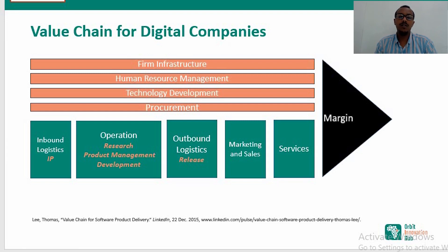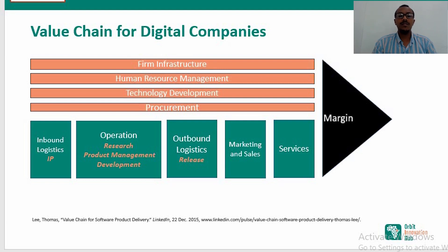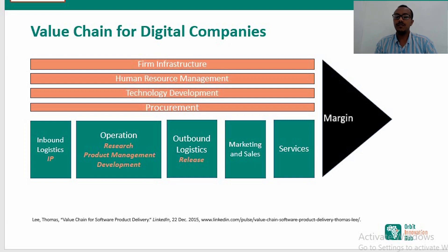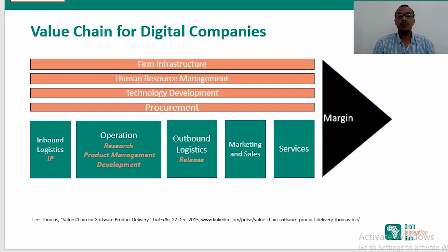One value chain proposal from Thomas Lee in his 2015 LinkedIn article suggests that logistics for digital companies are usually associated with intellectual property. For software development, operations includes research, product management, and development. Outbound logistics focuses on release — releasing digital software on different platforms. Marketing, sales, and services more or less remain the same depending on the specific digital company being considered.